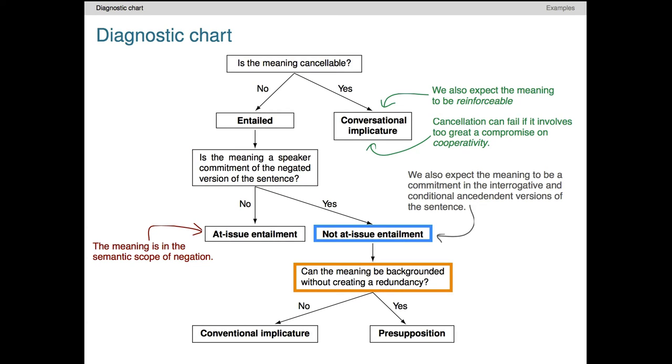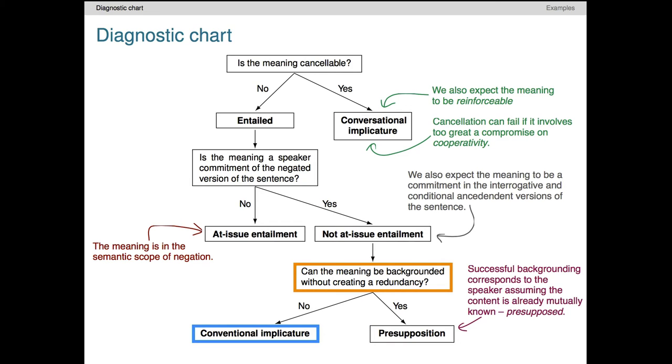Our work is almost done. The final question we need to ask is whether the meaning can be backgrounded without creating a sense of redundancy. The easiest way to do this is just to express meaning M before uttering sentence S. If this seems non-redundant, then we diagnose the meaning as presupposed. It's something the speaker is taking for granted as part of saying S, so it's of course fine to express it outright before S. On the other hand, if this backgrounding step results in a feeling of redundancy around meaning M, then M is being expressed as a conventional implicature, a secondary meaning that is new but meant only to play some kind of supporting role relative to whatever the main at-issue content of S happens to be.